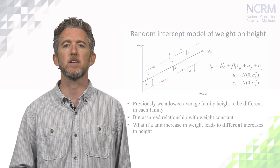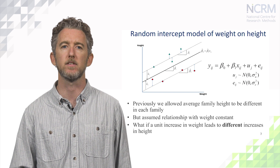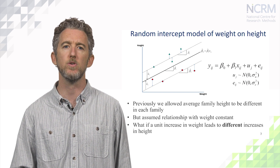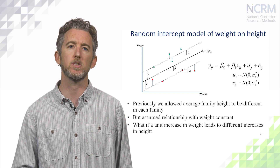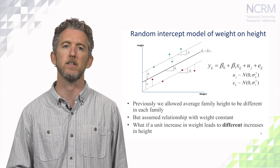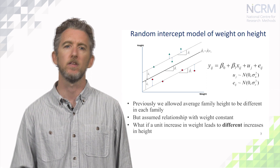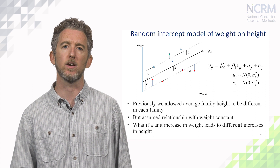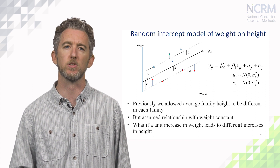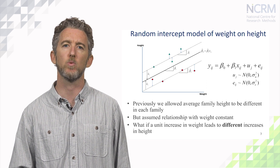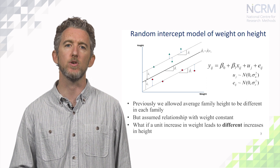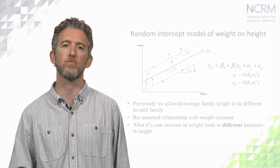Previously we considered the relationship between weight and height. Here we assumed that a one unit increase in weight was associated with the same increase in height across all families. We allowed the point where the line crossed the y-axis to vary across families. But what if the relationship between weight and height is not uniform across all families?